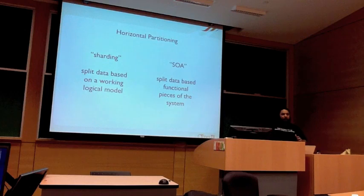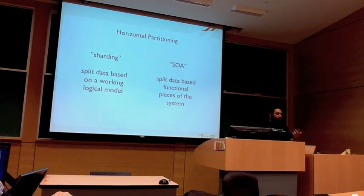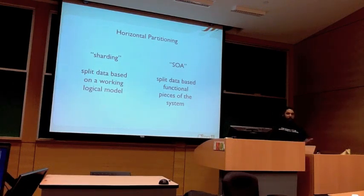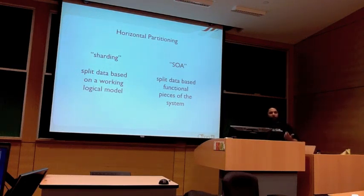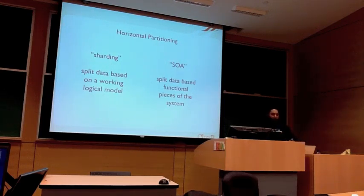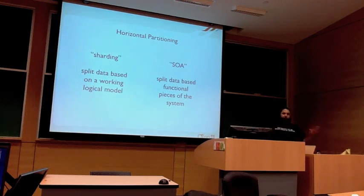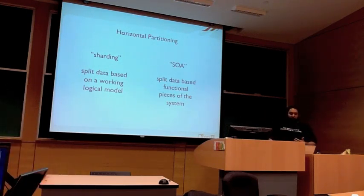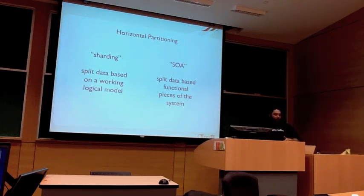For horizontal partitioning there are basically two approaches. One is typically referred to as sharding, where you split your data based on a logical model. The other is what I call the SOA approach, where you split data based on functional pieces of your architecture. SOA — service-oriented architecture — was a big buzzword in the mid-90s and early 2000s, kind of went away, and now people are actually starting to do it more often. I'll start with SOA because it's easier to wrap your head around.